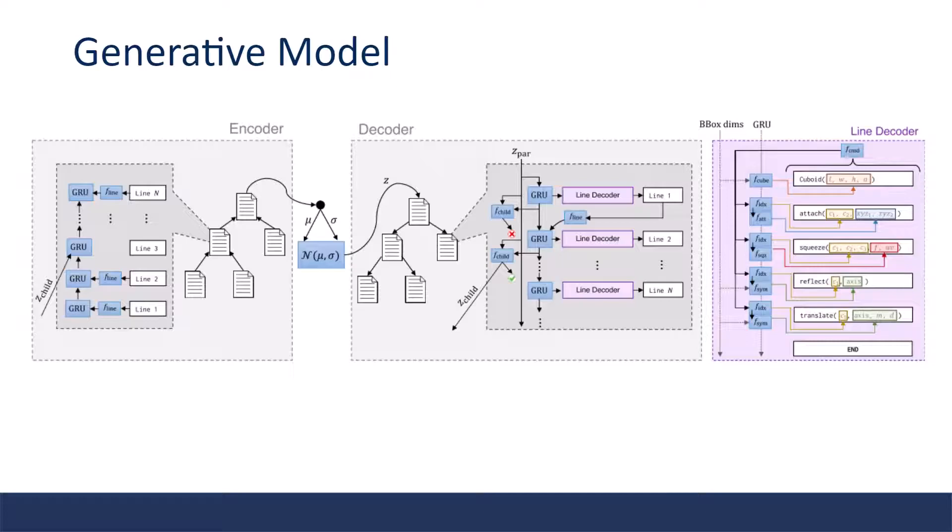Now we need a generative model to learn to produce the Shape Assembly program. The model is a hierarchical sequence variational auto-encoder. Given a Shape Assembly program, the encoder ascends the hierarchy from the leaves to root, encoding each subprogram into a latent z vector. Given a latent code, the decoder recursively decodes a hierarchical Shape Assembly program. Within each hierarchy node, a recurrent neural network decodes each line of the program.